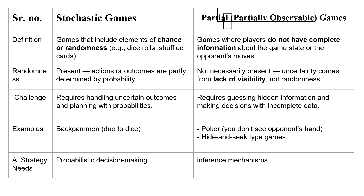Now let's look at the difference between Stochastic Games and Partially Observable Games. First, the definition: Stochastic Games are games that include elements of chance or randomness — for example, dice rolls or shuffled cards that introduce randomness. Whereas in Partially Observable Games, players do not have complete information about the game state or the opponent's moves — there is no complete information about the game state.